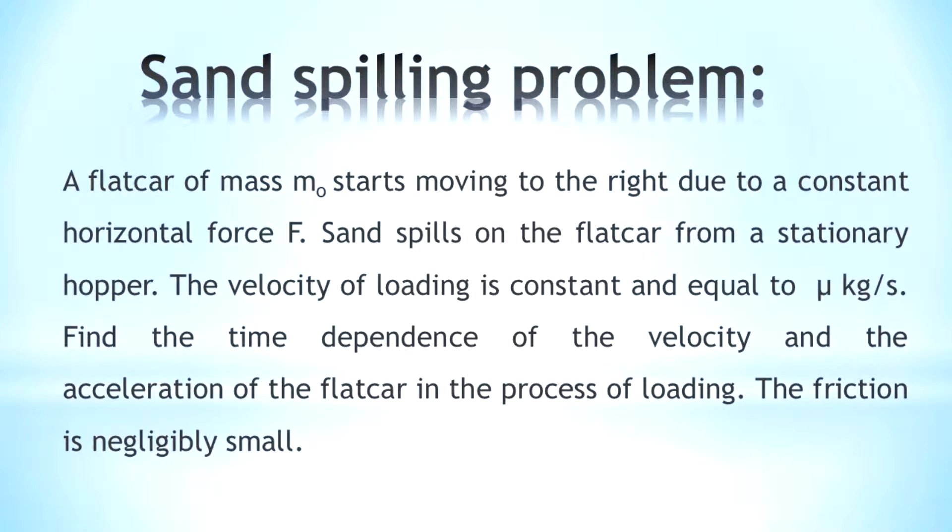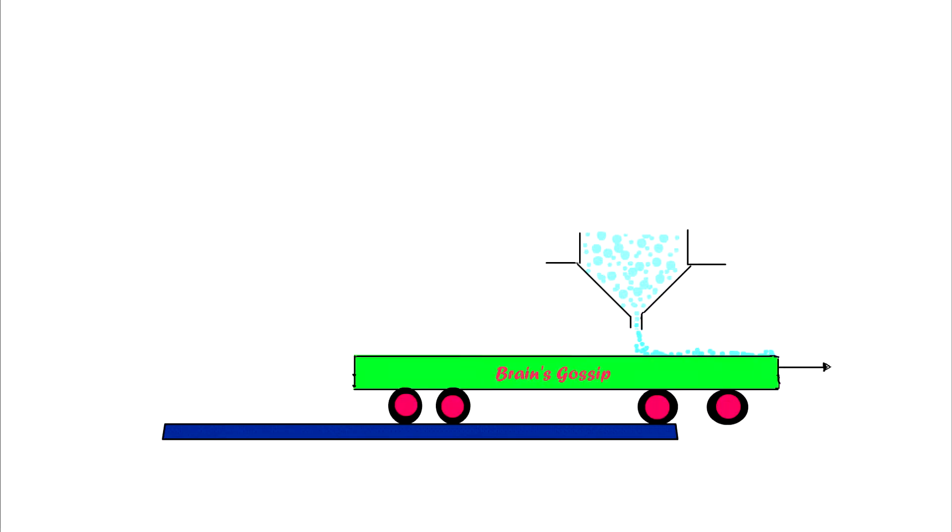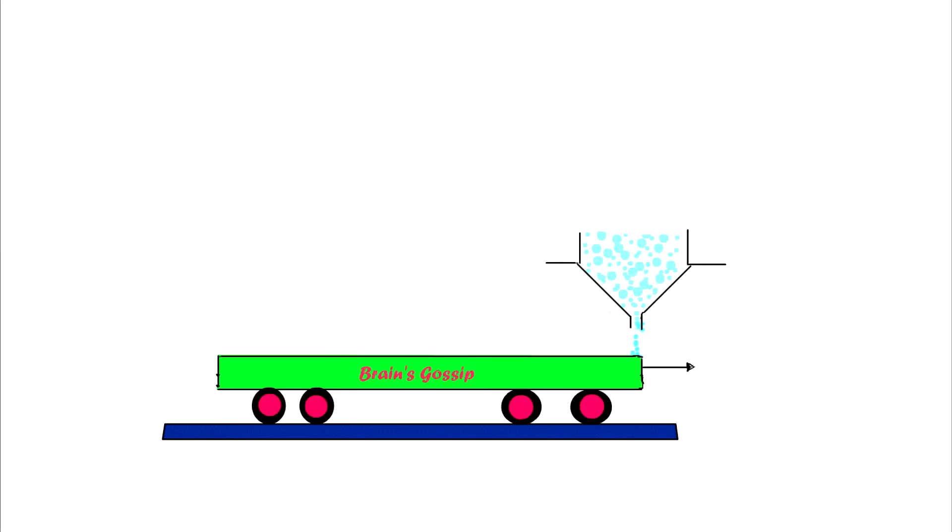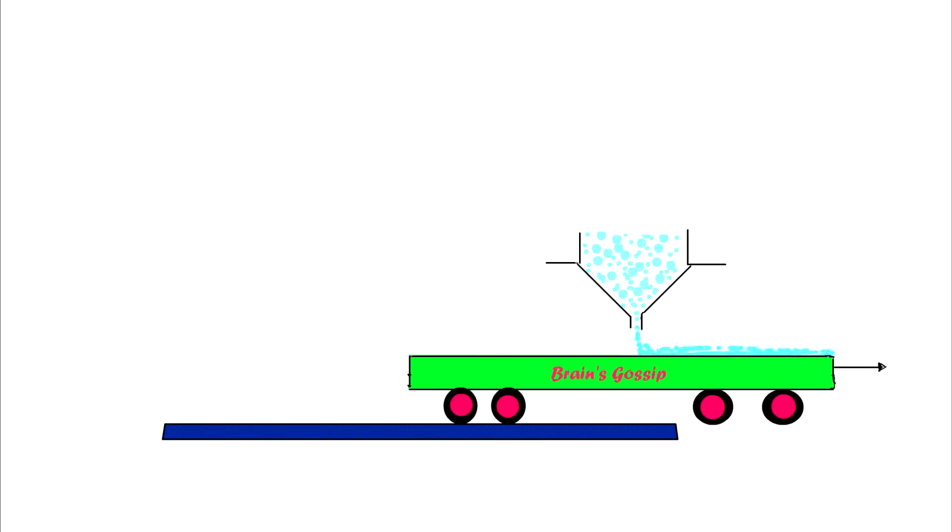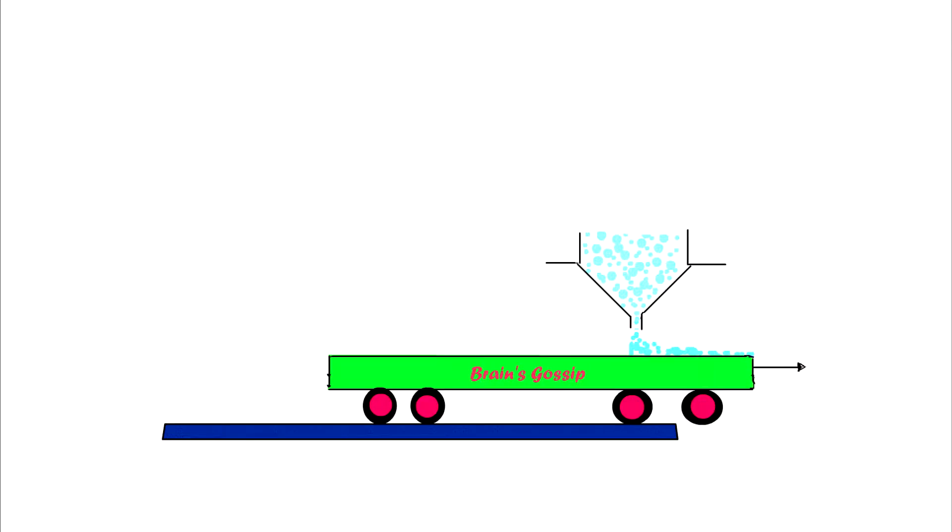Let us understand the problem with a simple diagram. In the free body diagram of our problem, we can see a flat car of green color moving on the platform, and sand spills on the flat car from the hopper.